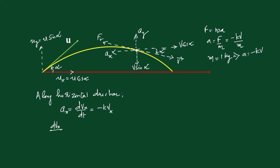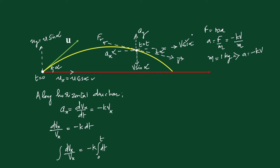Rearranging this equation, we get dvx/vx = -k dt. Integrating both sides: integral of dvx/vx = -k integral of dt. The limit for time is 0 to t. The limit for velocity: at t = 0, initial velocity is u cos alpha, and at t = t, velocity along horizontal direction is v cos alpha. So the limits are from u cos alpha to v cos alpha.